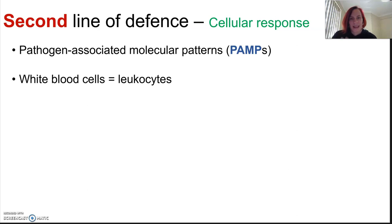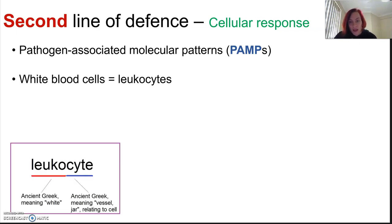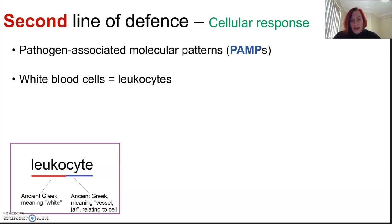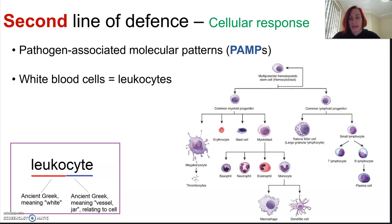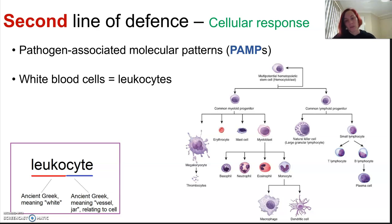We talk about our white blood cells, also called leukocytes — a word essentially meaning white. They were first found in pus. There are many types of specialized white blood cells that participate in this response. They recognize molecular patterns and try to clean up the problem before it becomes worse.